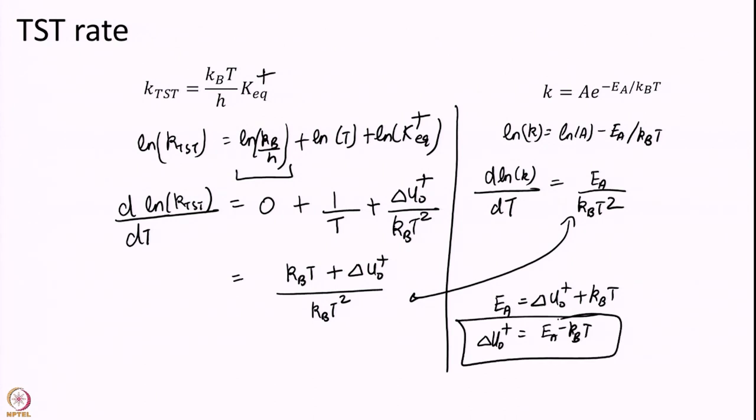So, remember this fact: actually internal energy is not exactly the same as potential energy. Internal energy also remember has average kinetic energy included in it. And because of that average kinetic energy you get this factor of KT. So, EA and delta U naught are not same. That is number one point.